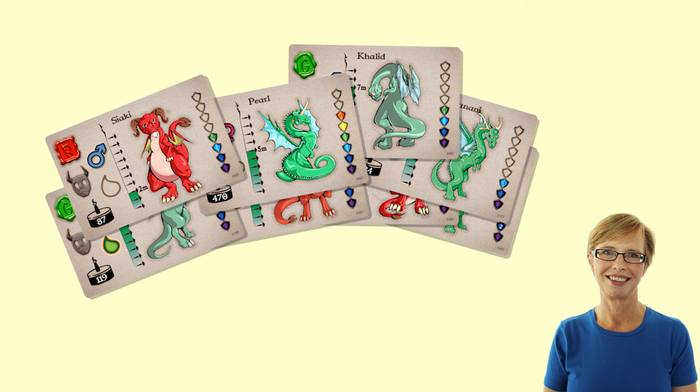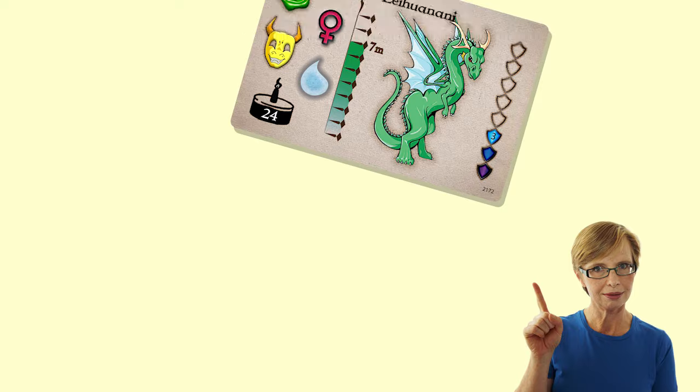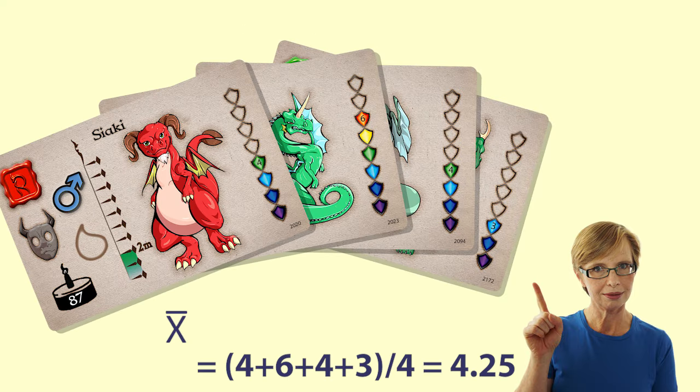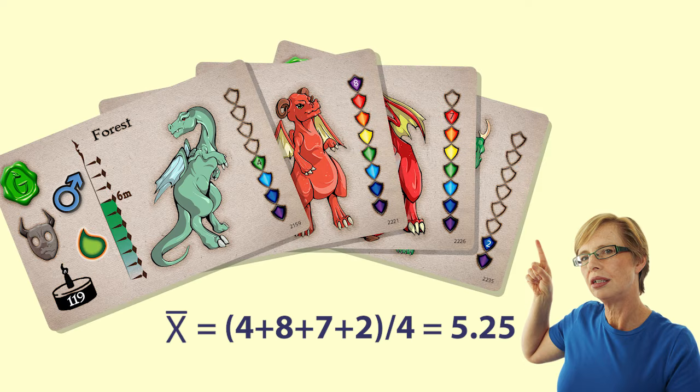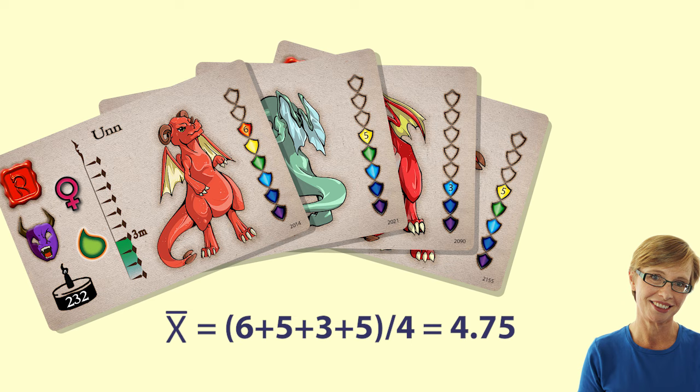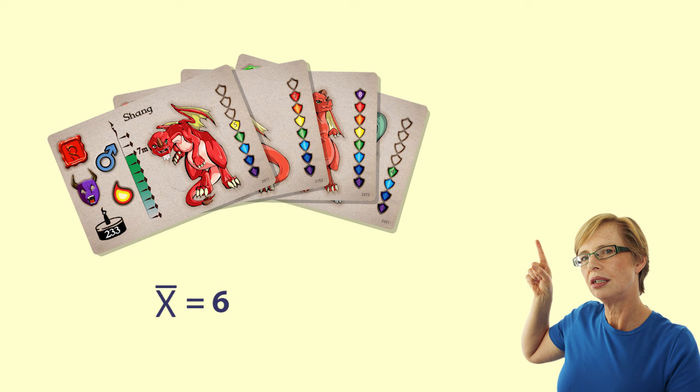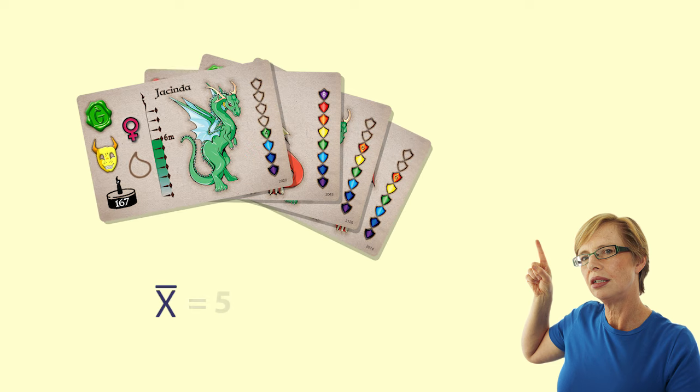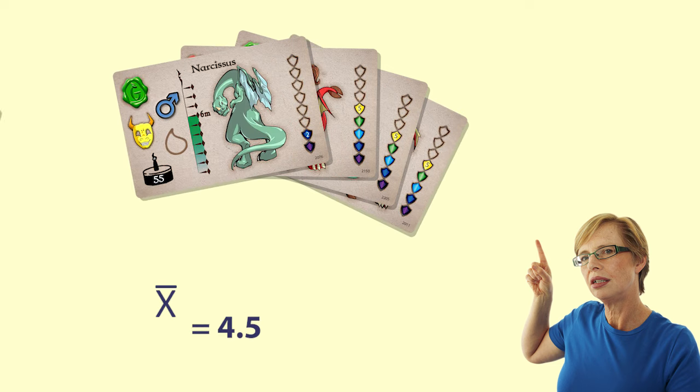Let us take some samples of our dragons and see what the mean strength is for each sample. Here's our first sample. The mean is 4.25. And here is another sample. The mean is 5.25. And here's another sample. The mean is 4.75. And here are a few more samples. The means are 6, 5, 3.5, and 4.5.